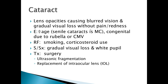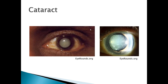Signs and symptoms of cataracts include gradual vision loss and a whitening of the pupil. Treatment is typically surgery — ultrasonic fragmentation or replacement of the intraocular lens. Here are some examples of cataracts, and again you can see the white opacity of the lens. These people will start to complain of gradual vision loss and blurriness.